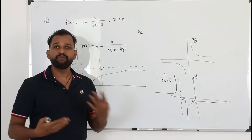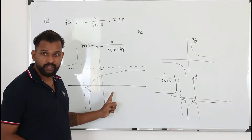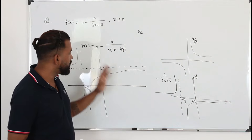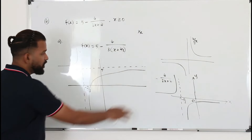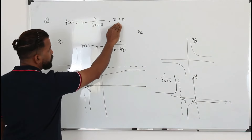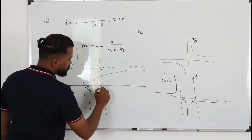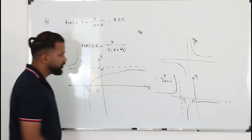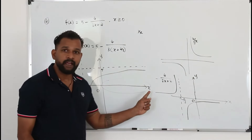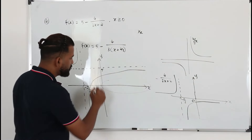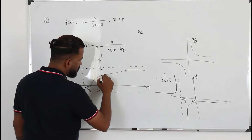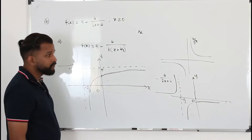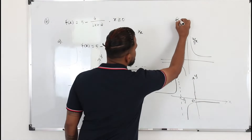Once you practice more questions you can quickly sketch this — that's the easiest way to find the range without making mistakes. Now we have the full graph. We need to pay attention to the domain: x is greater than or equal to zero. Looking at that part of the graph, it starts from x equals zero and goes all the way approaching 5.